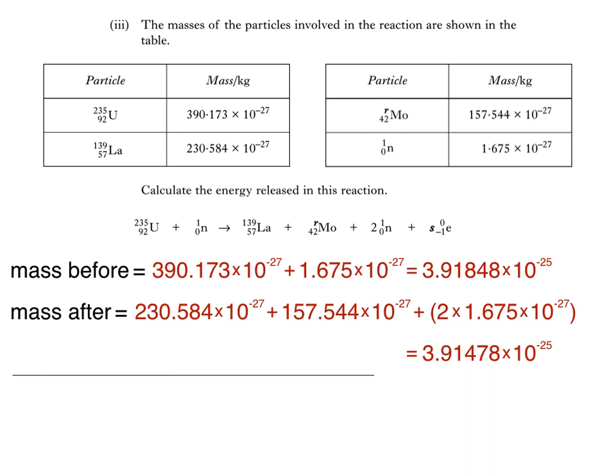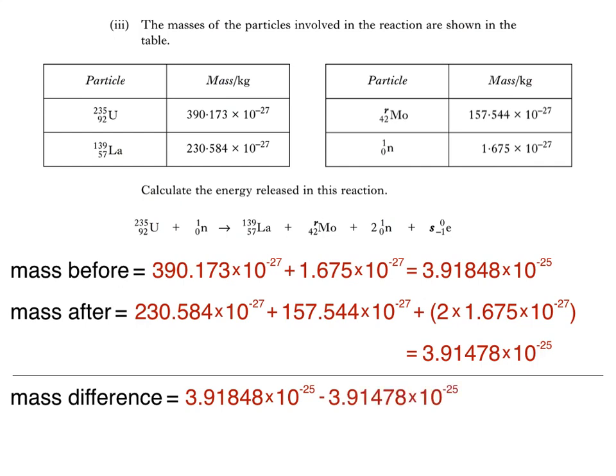So the difference in mass is equal to the total mass before the reaction minus the total mass after the reaction, which is 3.7 times 10 to the negative 28 kilograms.